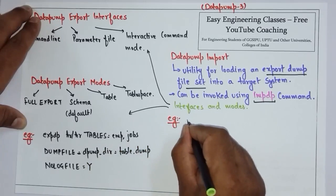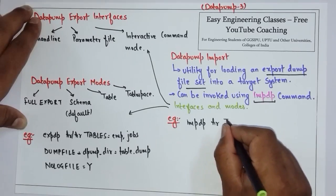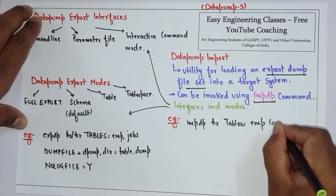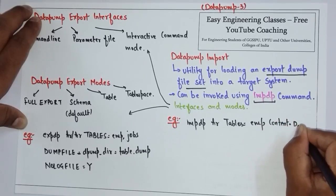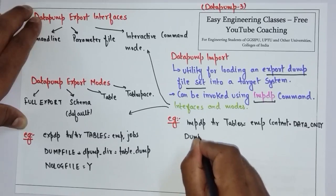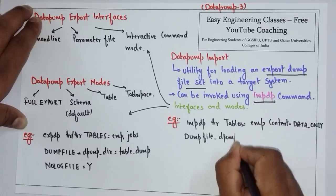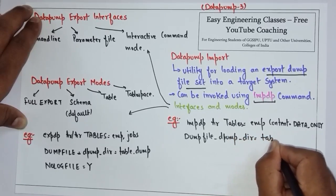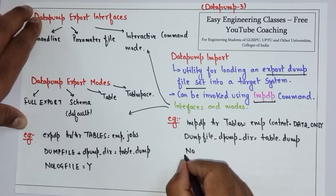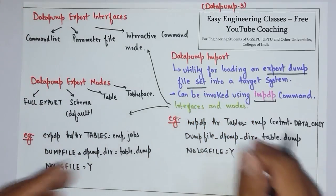To import, you use the impdp command followed by the username — this is the user you want to import into. Then specify the tables, for example emp. Then specify the content — for example, data only — using the data_only parameter. Finally specify the dump file from which you want to import. So this is about Data Pump Import.